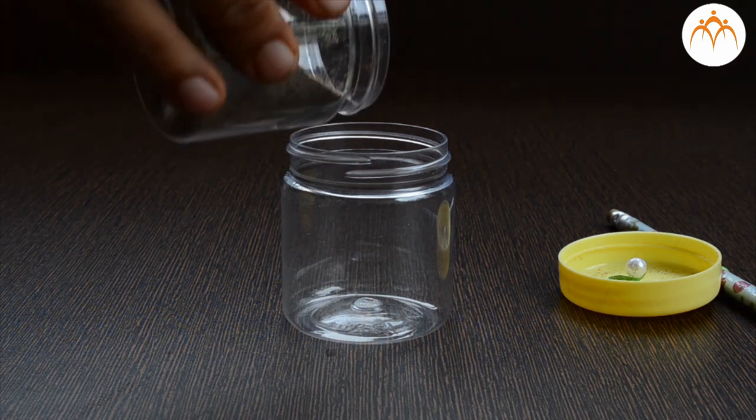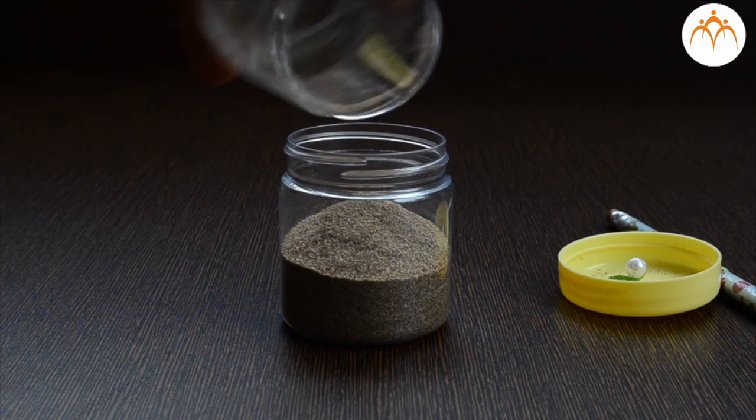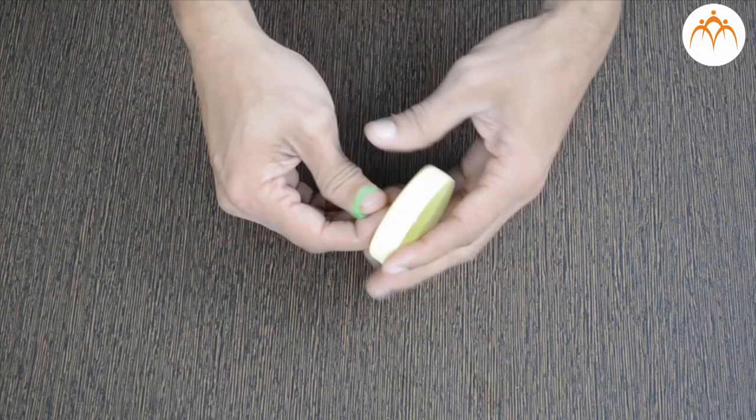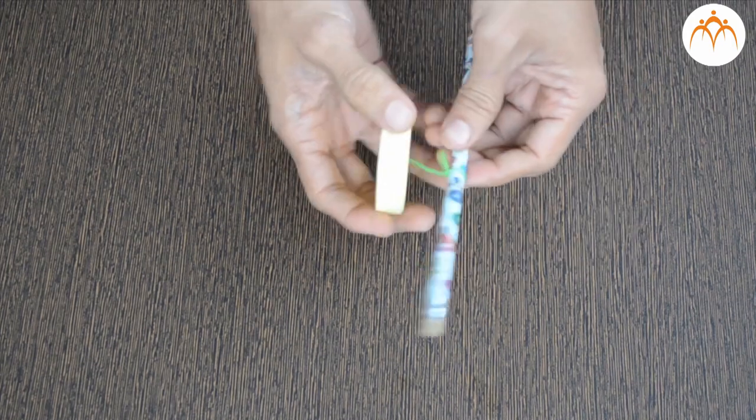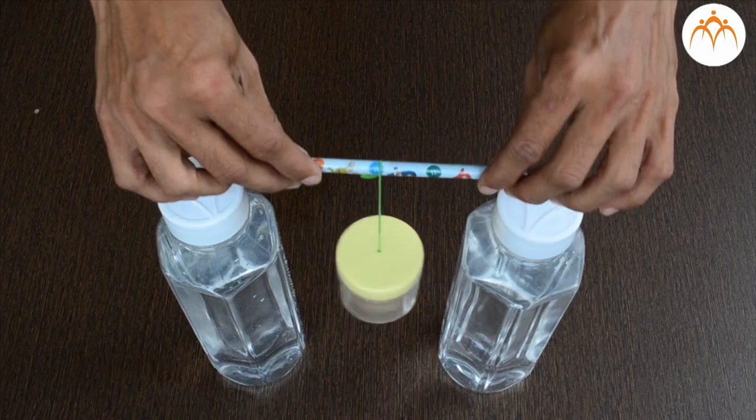Let us take this plastic container. We will make it heavy by adding some sand. We will tie this container with a rubber band to the pencil. Let us place this on these water bottles.